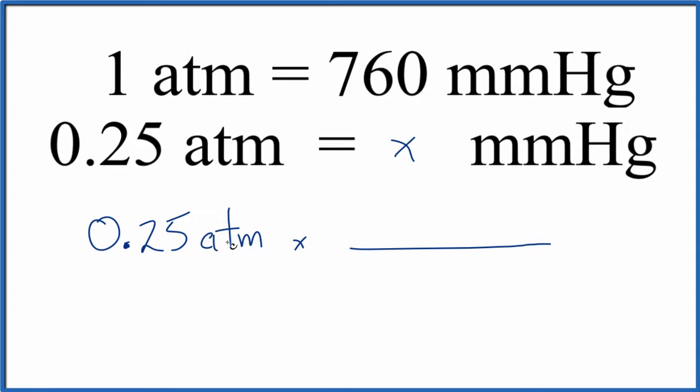So we want atmospheres on the bottom. That way, when we multiply, they'll cancel out and we'll put millimeters of mercury on the top. So that's what we'll be left with, because that's what we're looking for. So one atmosphere is 760 millimeters of mercury. This is our conversion factor.